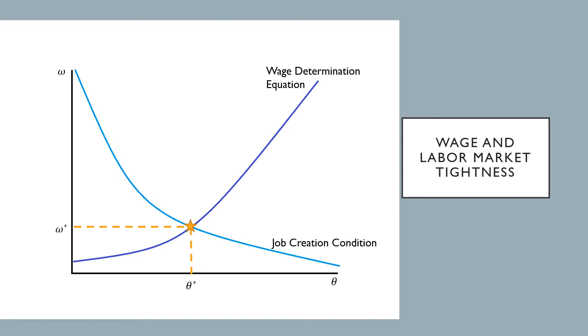So we see here that our job creation condition is going to be a downward sloping curve while our wage determination equation is going to be upward sloping. And where these two curves intersect is our equilibrium condition.